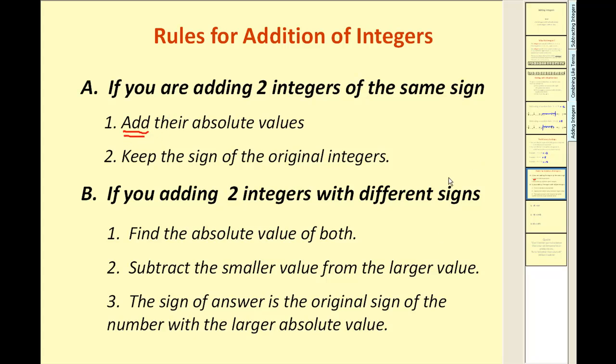If you are adding two integers with different signs, you find the absolute value of both. Subtract the smaller value from the larger value. The sign of the answer is the original sign of the number with the larger absolute value. So if they're different signs, we have to subtract.